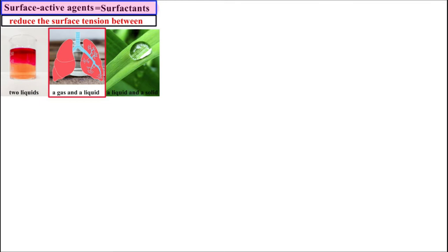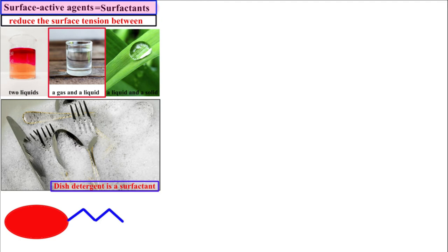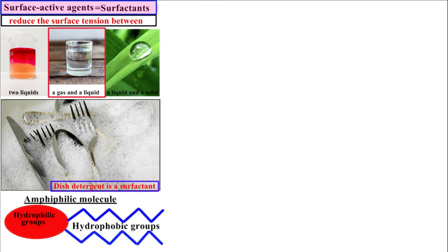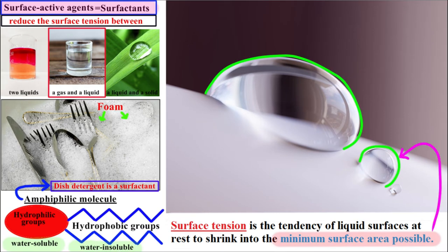Let me give you an example. Dish detergent is a surfactant. Surfactants are usually organic compounds that are amphiphilic, meaning they contain both hydrophobic groups and hydrophilic groups. Therefore a surfactant contains both a water-soluble component and a water-insoluble component. The surface tension is the tendency of liquid surfaces at rest to shrink into the minimum surface area possible.